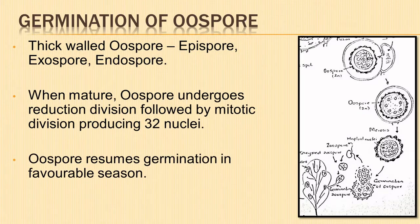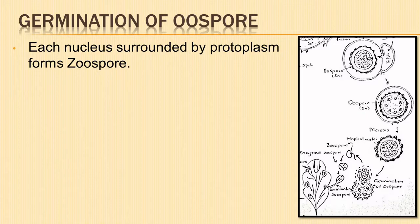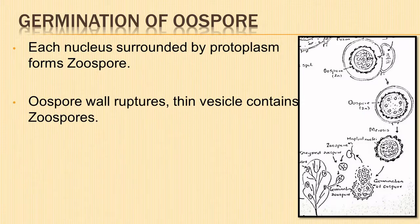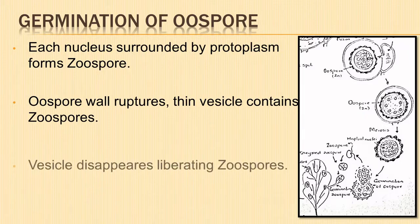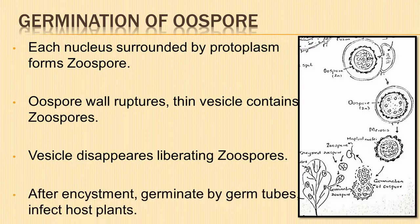During favorable season, the oospores resume their germination. The nuclei undergo a number of mitotic divisions forming numerous nuclei. Each nucleus is surrounded by protoplasm and forms biflagellate reniform zoospores. The wall of the oospore ruptures and a thin vesicle is formed containing the mass of zoospores. With the disappearance of the vesicle, the zoospores are liberated. After a brief period of motility, they get encysted and then finally germinate by germ tubes, infecting healthy host plants.